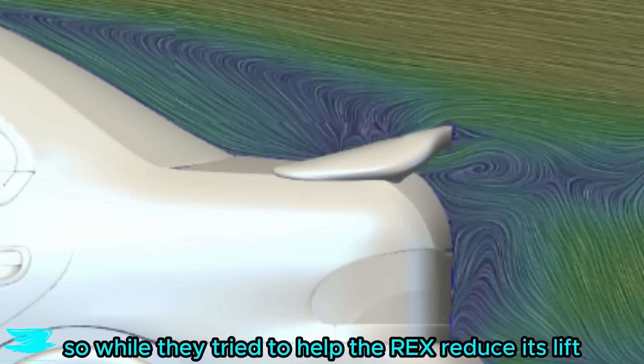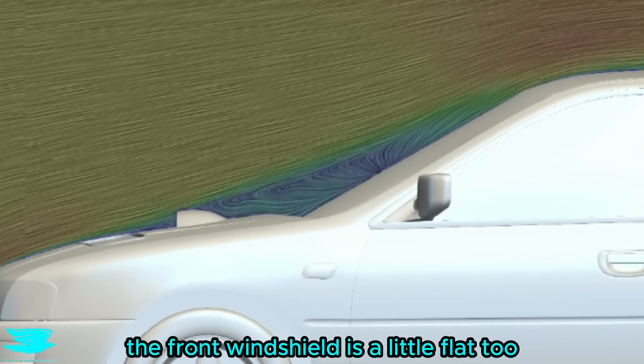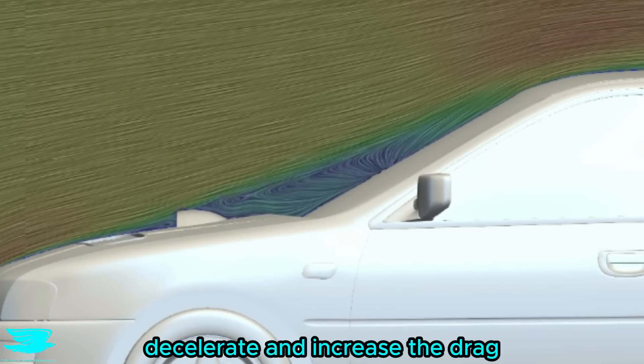So while they tried to help the Rex reduce its lift with this rear wing, it wasn't well positioned. The front windshield is a little flat too, which also causes a lot of quite fast moving flow to hit it, decelerate, and increase the drag.